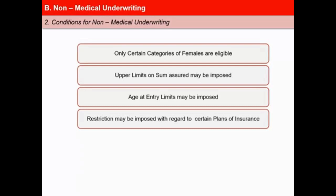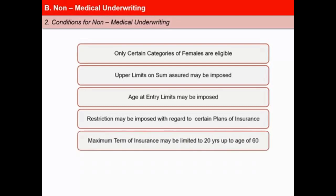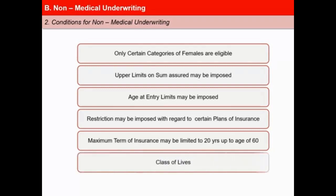Fifth, maximum term of insurance may be limited to 20 years up to age 60. And sixth, class of lives — non-medical insurance may be allowed to certain specific categories of individuals, for example employees of reputed firms, as these companies maintain proper leave records and may also have periodic medical examinations so that the employee's medical status can be verified easily.